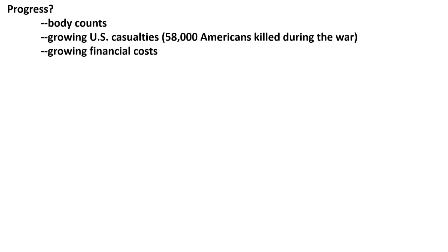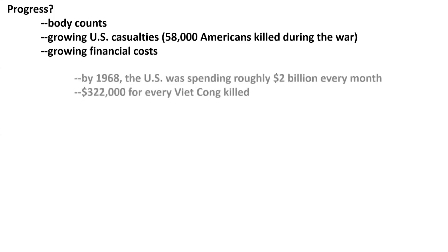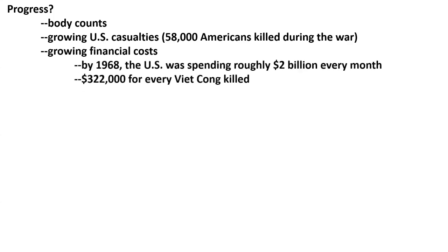On the American side, there was a growing casualty list. By the time the war was over, 58,000 Americans had died. Body counts were one way for the U.S. to try to measure progress. There was also a growing financial cost. By 1968, the U.S. was spending roughly $2 billion every month. For every Viet Cong killed, it was costing the American taxpayer $322,000. So were we winning? We were running up casualties on the other side, but they were very expensive, and Americans were dying in the process.